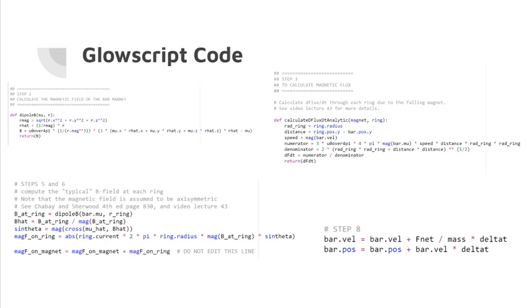Here are some parts from my GlowScript code. For this code, I created a function to calculate the magnetic field of the bar magnet, treated as a magnetic dipole. Then I calculated the magnetic flux over change in time. I also computed the typical B field at each ring, noting that the magnetic field is assumed to be axisymmetric. Finally, I wrote code to update the magnet's velocity and position as functions of time by applying Newton's second law.